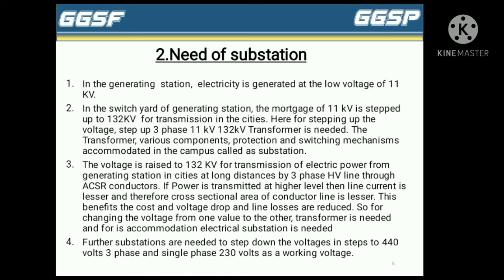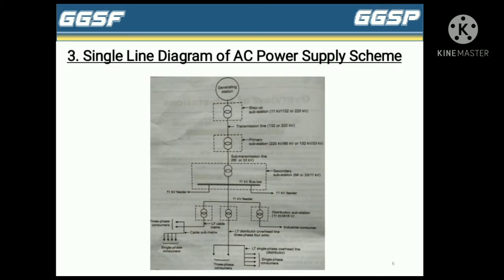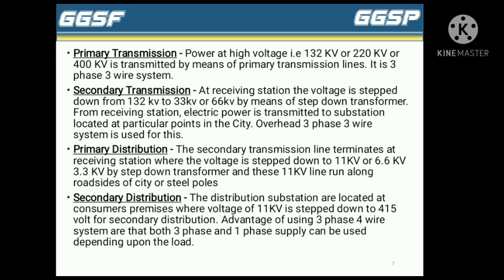After this, we take a look at our last topic: the single line diagram of AC power supply. This diagram gives a general idea about the supply system. The diagram can be explained in four parts. The first part is primary transmission — power at high voltage, that is 132 kV, 220 kV, or 400 kV, is transmitted by means of primary transmission lines. It is a three-phase system.